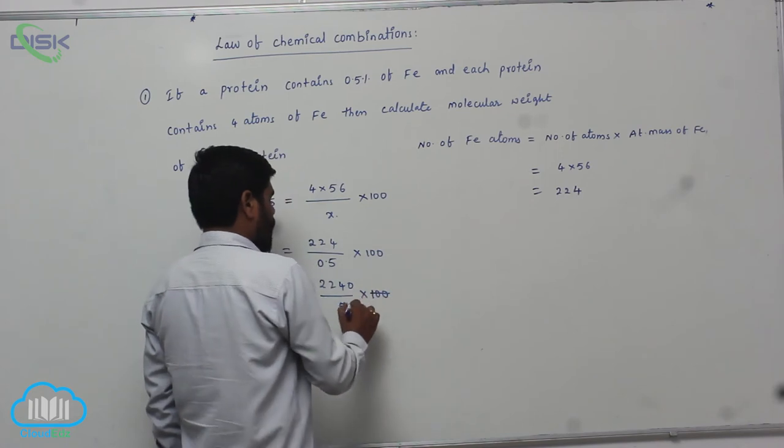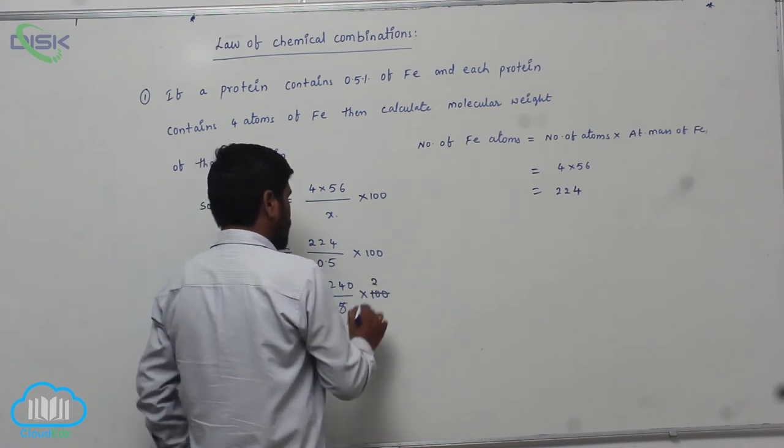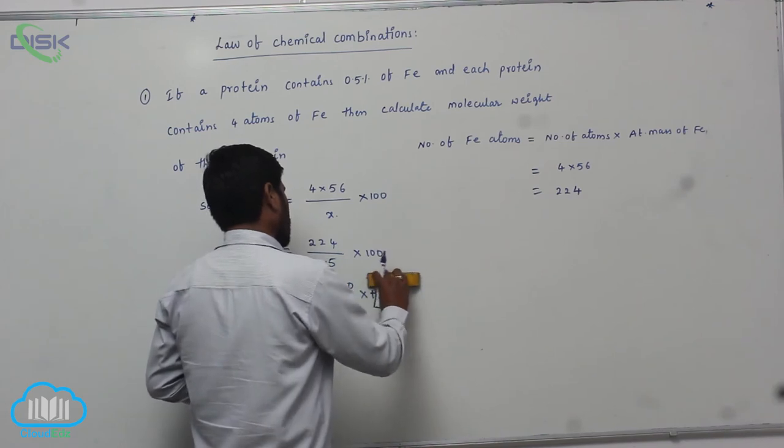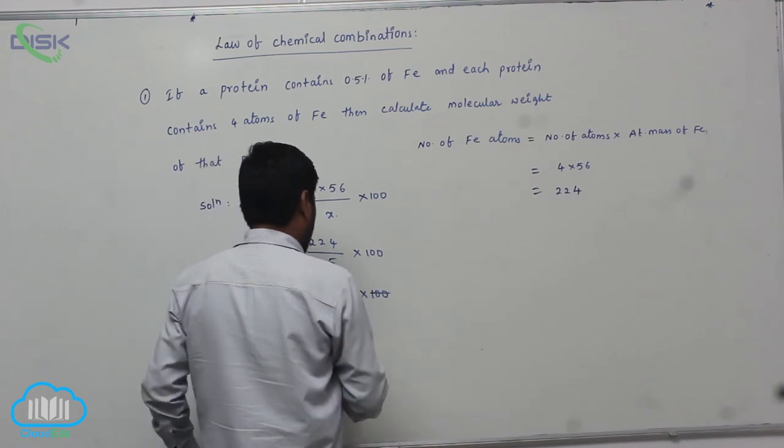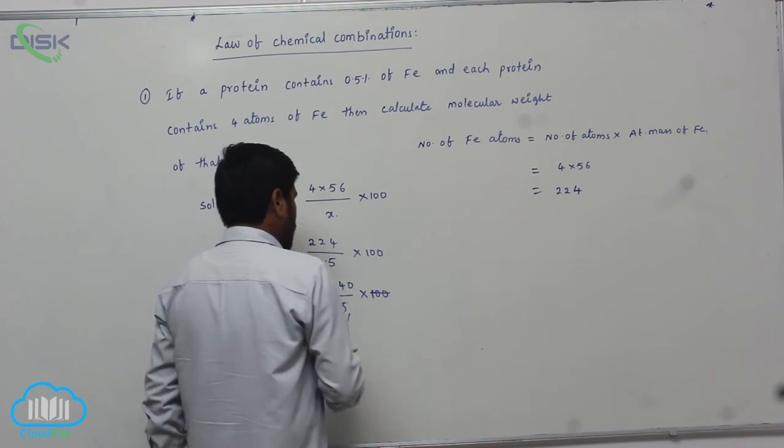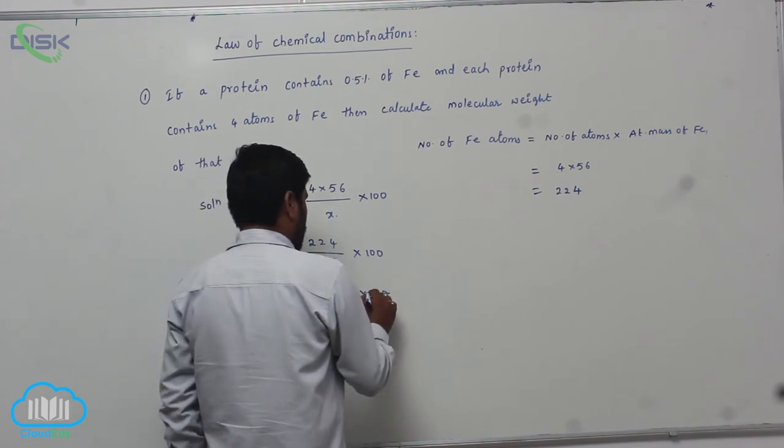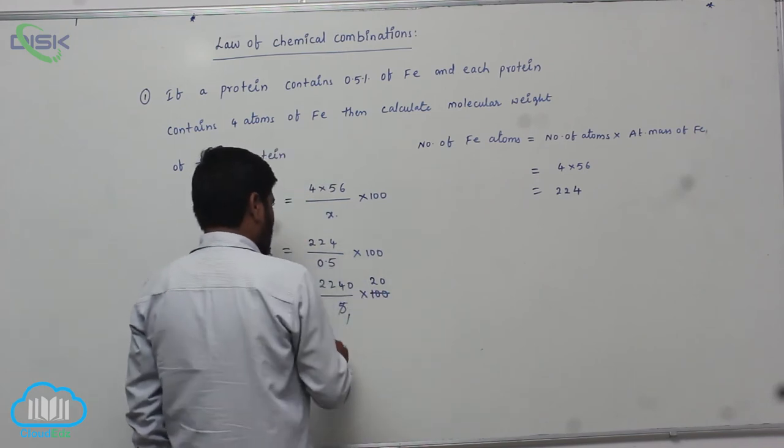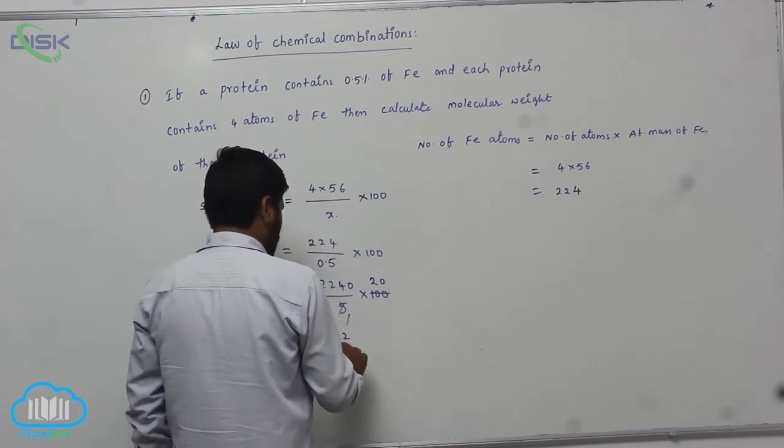How many? 4, giving 20. 25, 5, 5, 5, 1. This is 2 here. So it becomes 224.